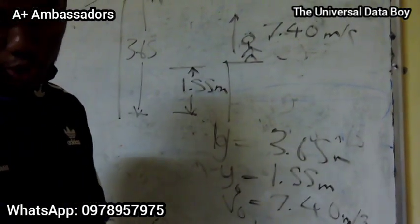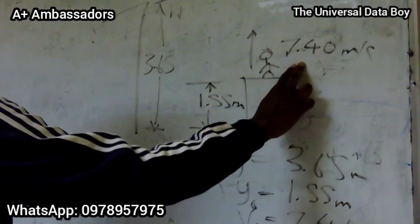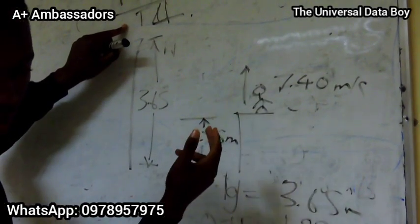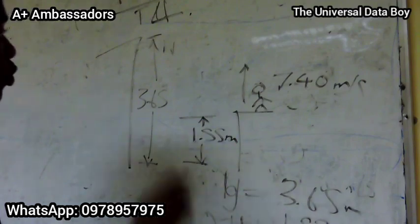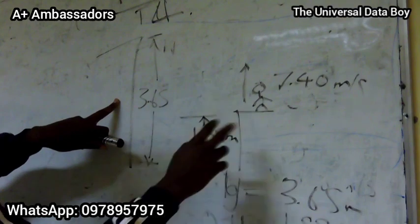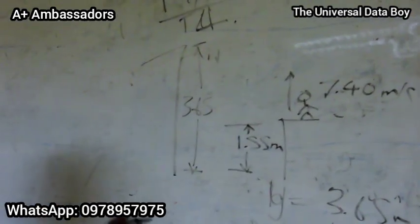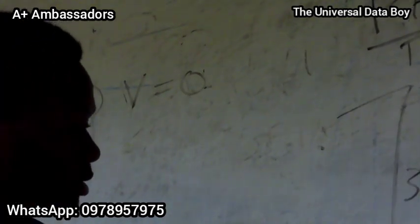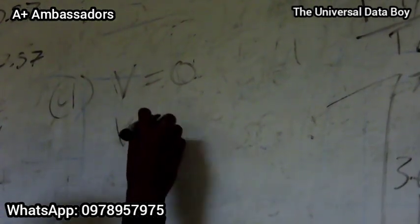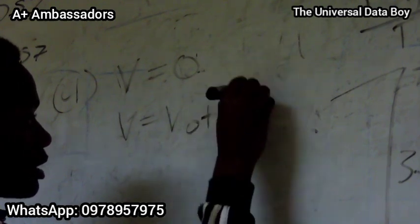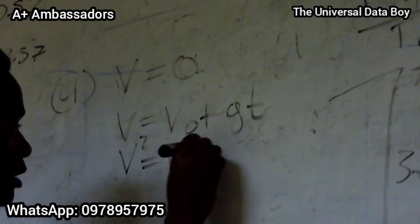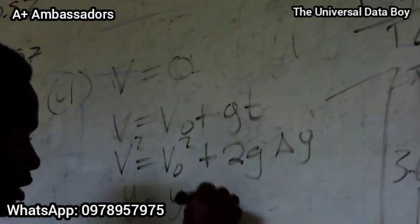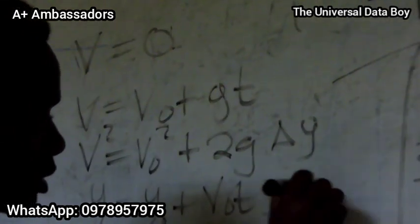Question A asks: will the rock reach the top of the wall? When the rock stops, its velocity will be zero. We look at our kinematic equations: V equals V naught plus GT; V squared equals V naught squared plus 2G times change in Y; and Y equals Y naught plus V naught T plus one-half G T squared.